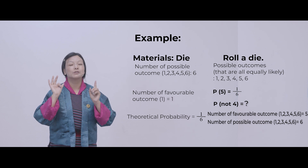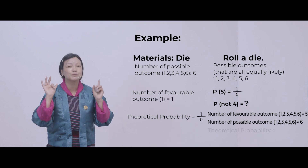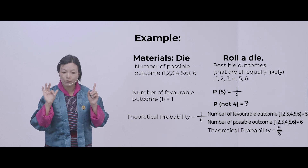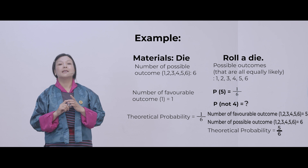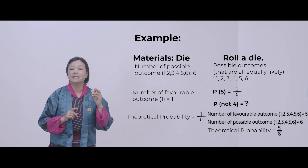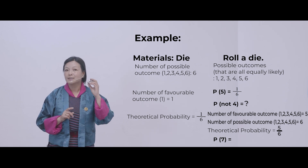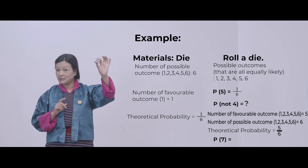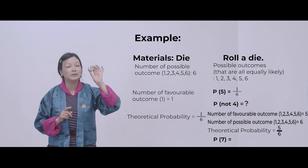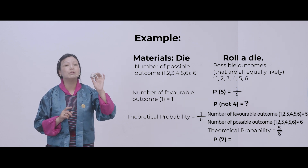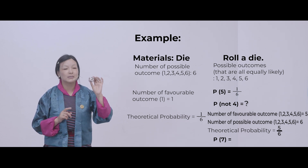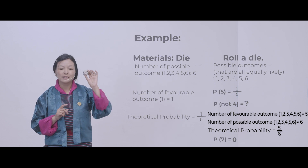Five are left. So the theoretical probability would be 5 over 6. Now let's find out the probability of getting number 7. Is there a number 7 on this die? No — there is no number 7. So the theoretical probability of getting number 7 is 0.